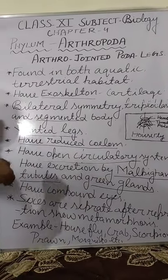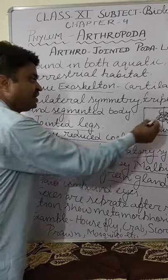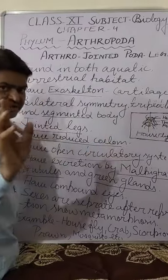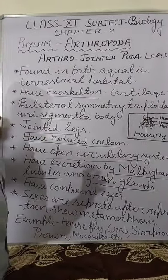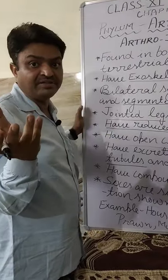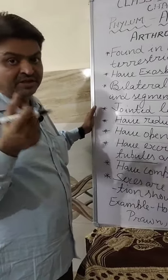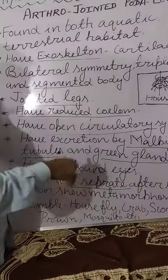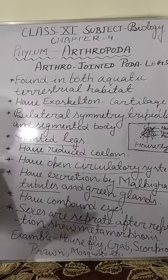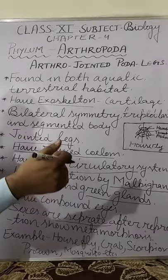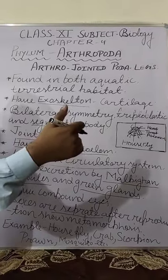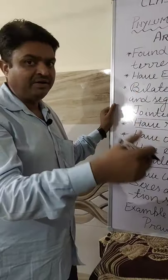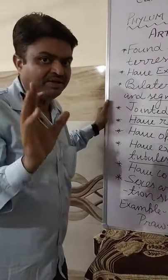They also have eyes. Like in this house fly you can see these compound eyes — they don't have general light spots, they have compound eyes like us. Their sexes are separate, meaning they are found as both male and female. After reproduction they show metamorphosis — the egg is converted into larva, larva is converted into caterpillar, and with the help of that the young insect is obtained.